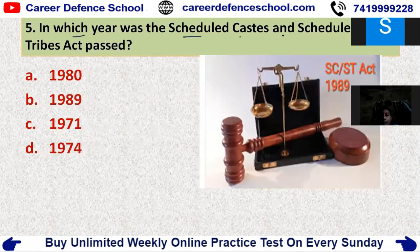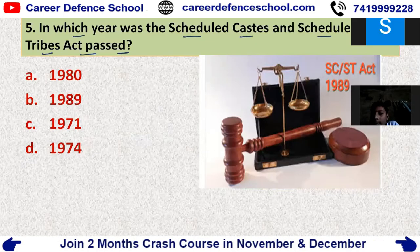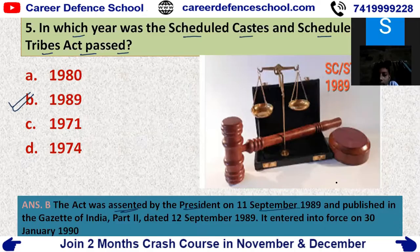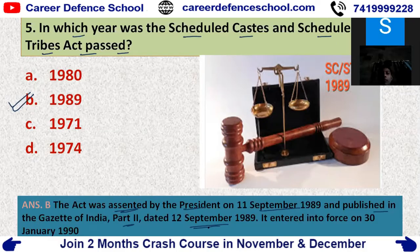In which year was the Scheduled Castes and Scheduled Tribes Act passed? The correct answer is option B — 1989. The Act was assented by the President on the 11th of September 1989, and published in the Gazette of India Part 2, dated 12th September 1989. It came into force on 30th January 1990.